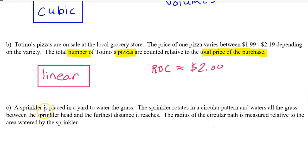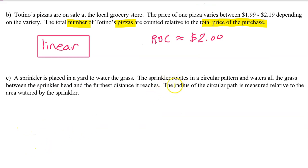Part C. A sprinkler is placed in a yard to water the grass. The sprinkler rotates in a circular pattern and waters all the grass between the sprinkler head and the furthest distance it reaches. The radius of the circular path is measured relative to the area watered by the sprinkler. In this context, the radius of the circular path will be the input value, and the area watered will be the output value. So, we should use a quadratic model, because we are modeling an area.